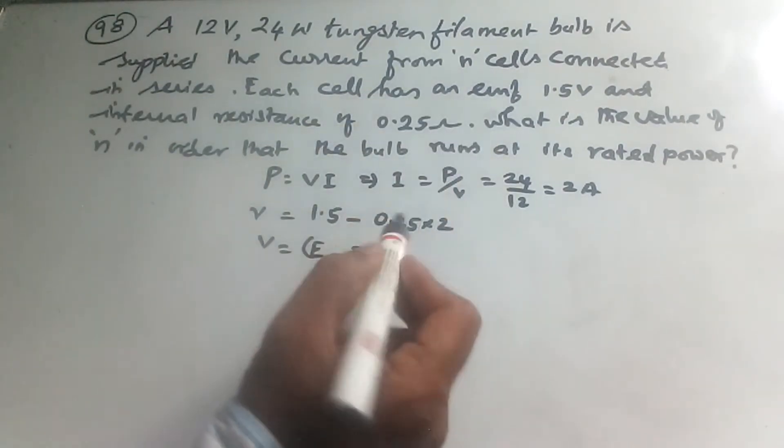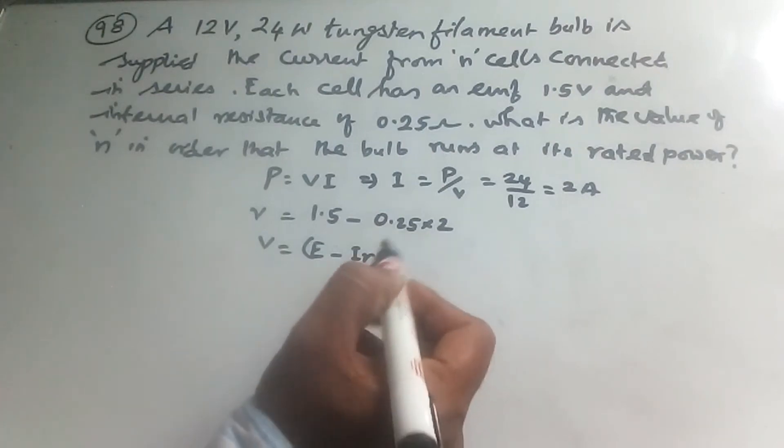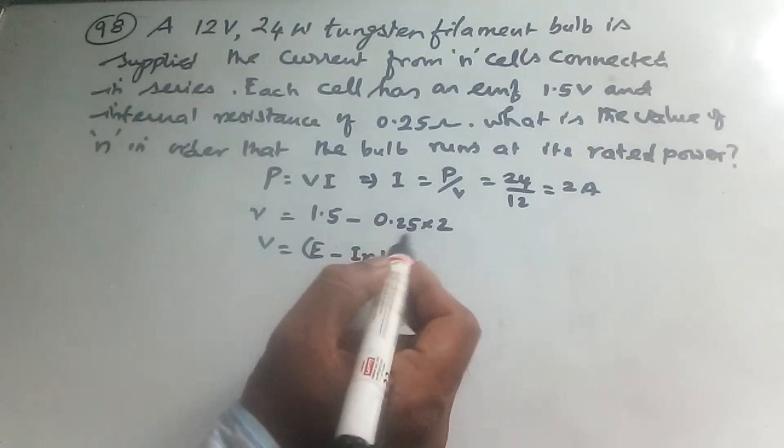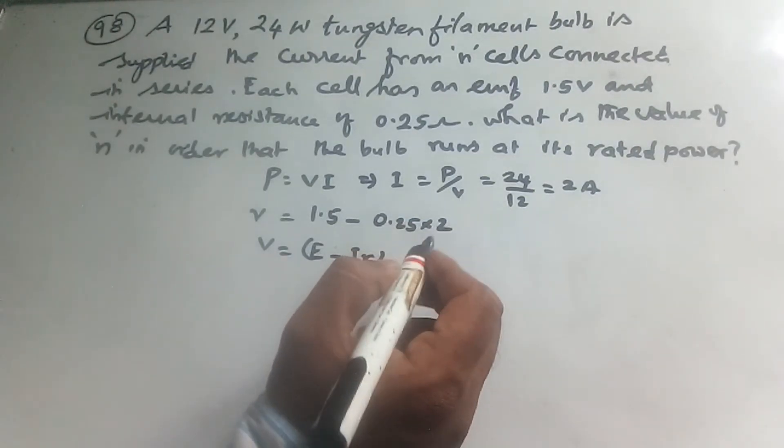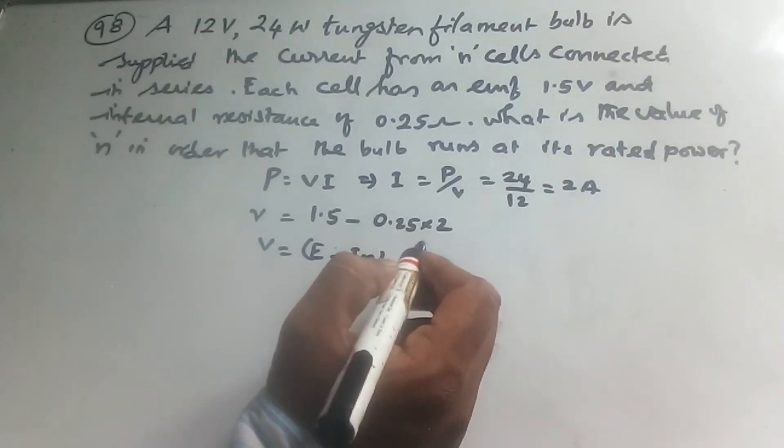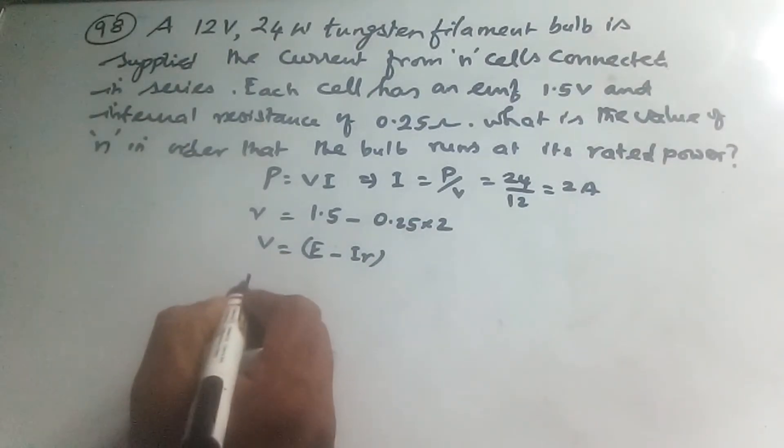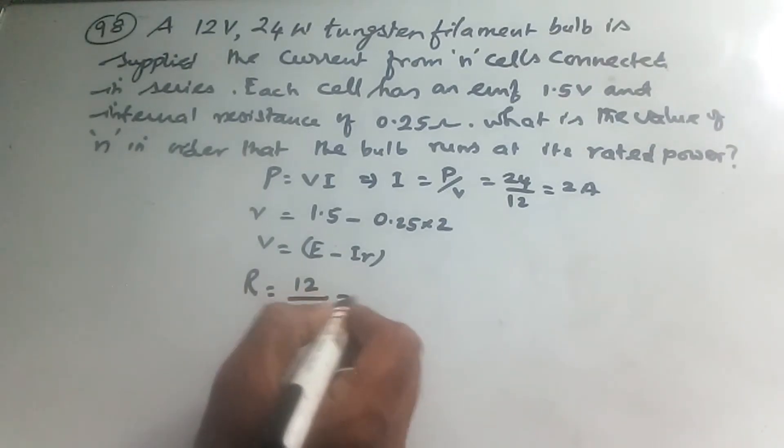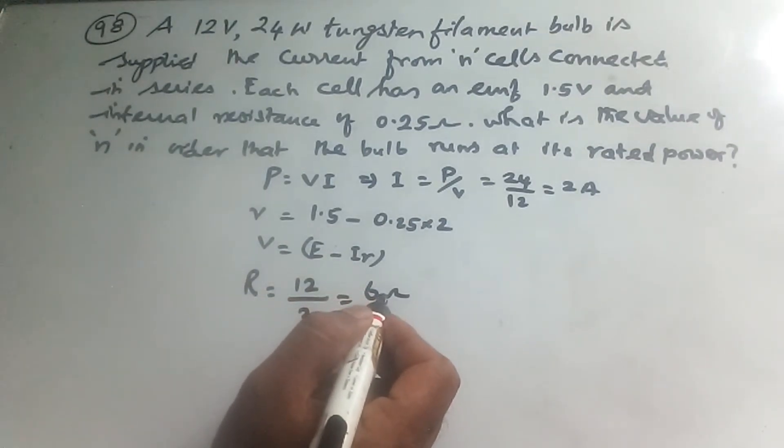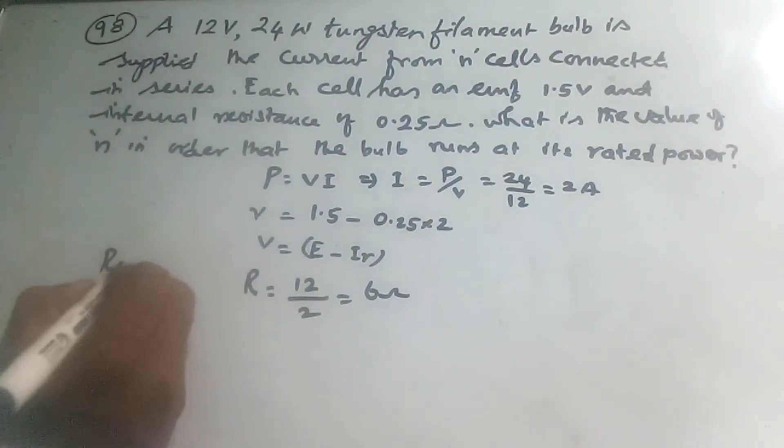R is 1.5 minus 0.5, which equals 1.0V per cell. The resistance of the bulb is R = V/I = 12V / 2A = 6Ω. This is the resistance of the bulb, the tungsten filament resistance.